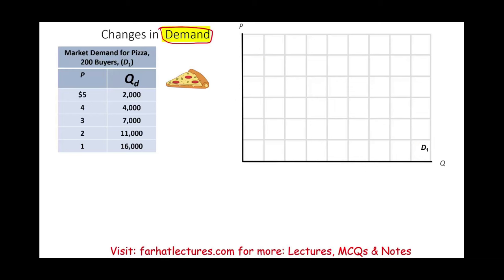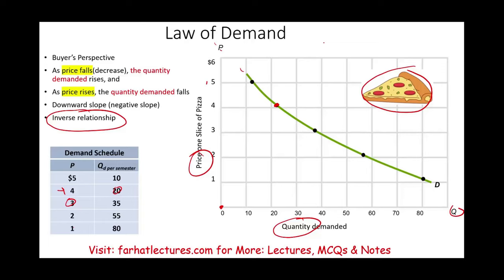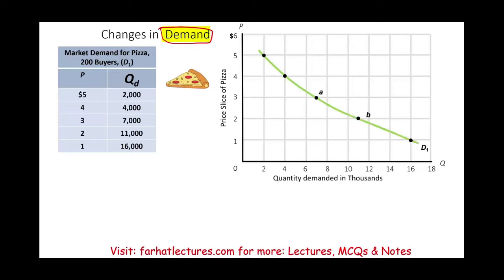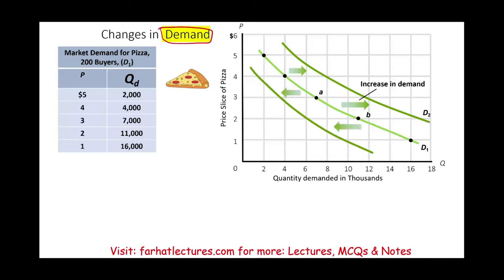What we did here is we looked at price versus quantity, and the changes were along this line — the quantity demanded was due to a change in price. However, there are other factors that could change the aggregate demand other than price. The price could stay the same but the quantity demanded could increase, which means shifting the whole curve to the right — an increase in demand — or shifting it to the left, which leads to a decrease in demand.